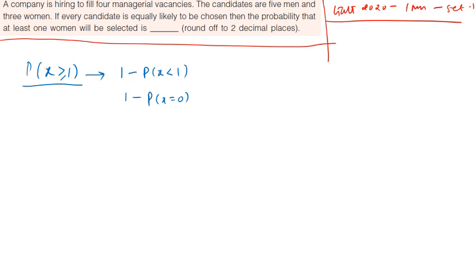X here represents women who are selected. Total number of candidates, women plus men, is 3 plus 5 equals to 8. Total 3 women and 5 men.